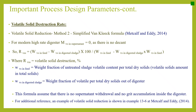Here RvSS is volatile solid destruction percentage, WvSS in feed is the weight fraction of untreated sludge volatile content per total dry solids, and WvSS in digested sludge is the weight fraction of volatile per total dry solids out of the digester. This formula assumes no supernatant withdrawal and no grit accumulation inside the digester. Example 13.6 in Metcalf and Eddy, 5th edition provides a worked example of volatile solid reduction.